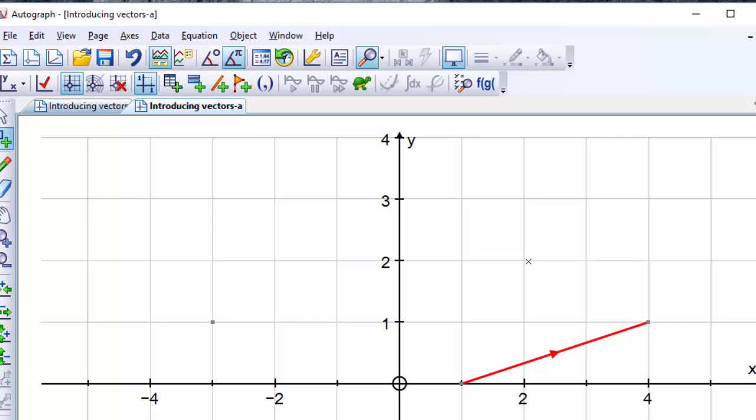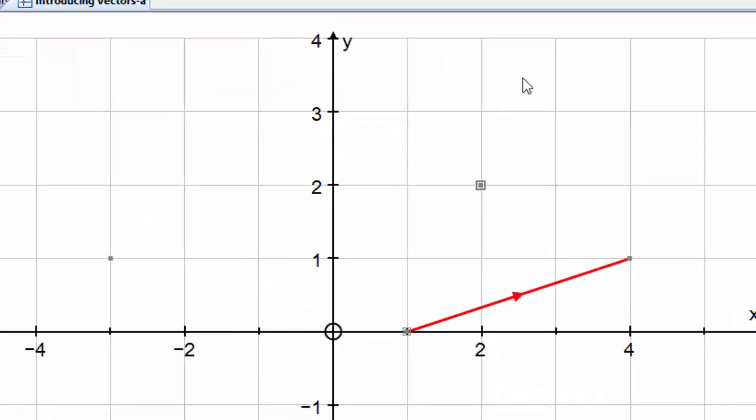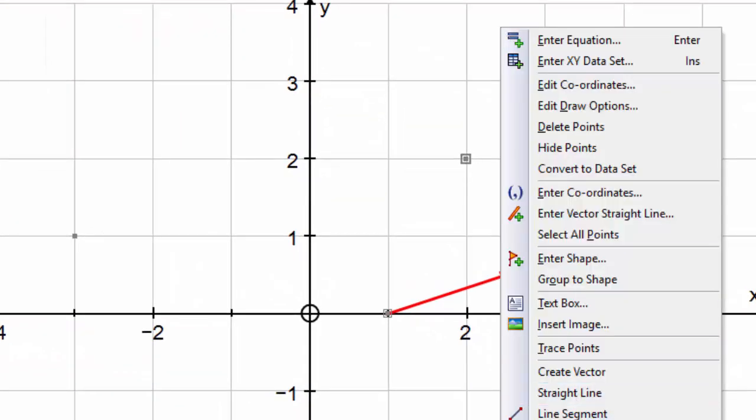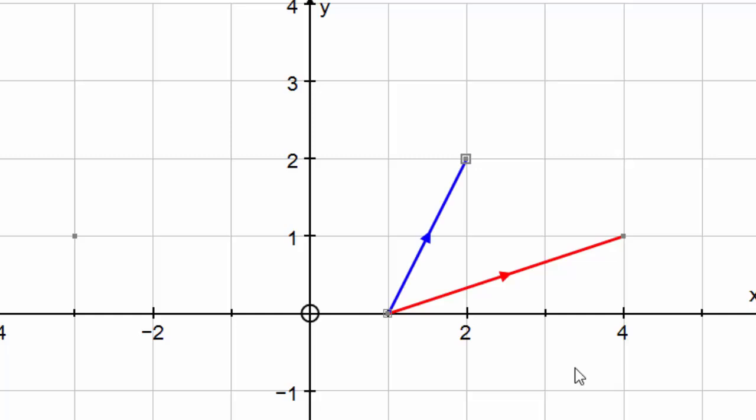So let's put another point up here and show that there's another way to define vectors in Autograph, which is from one point to the next. So right click, create a vector. Now this is rather different because it means you can move either end around quite happily.